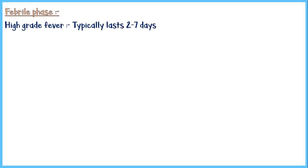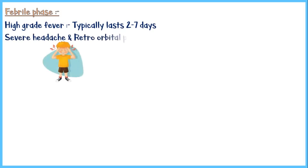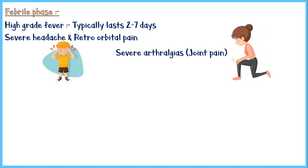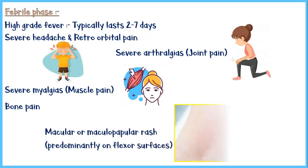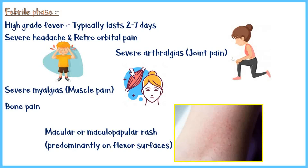In the febrile phase, high grade fever is the predominant symptom. In addition, the patient may complain of severe headaches along with retroorbital pain, severe arthralgias or joint pains, severe myalgias or muscle pain, and bone pain. Some people may also present with a macular or maculopapular rash, predominantly seen on flexor surfaces.